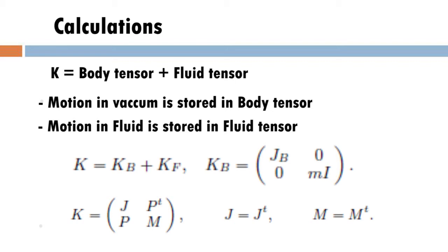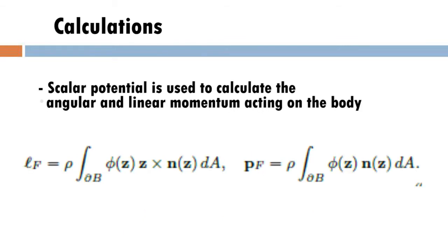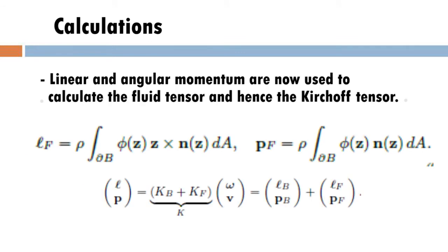But in order to approximate the effect of the surrounding fluid, an additional KF tensor needs to be computed. The fluid tensor KF depends only on the shape of the body and is completely independent of its material realization as captured by the mass and inertia tensor of the body. Scalar potential is important to calculate the forces acting on the body and hence helps find the linear and angular momentum acting on the body due to the fluid. Once the angular and linear momentums are calculated, we can easily find the fluid tensor and compute the motion of the body underwater.